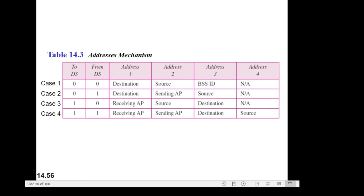The last case, number four: To DS is 1, From DS is also 1. This is the case where the distribution system is also wireless. The frame is going from one AP to another AP in a wireless distribution system. It needs four addresses to define the original sender, final destination, and two intermediate devices — Address 1, Address 2, Address 3, and Address 4.